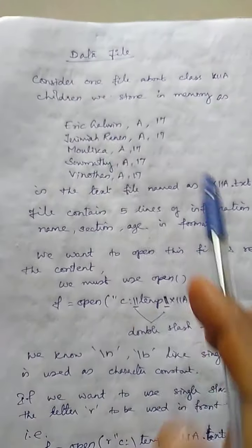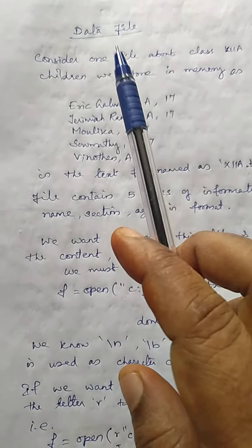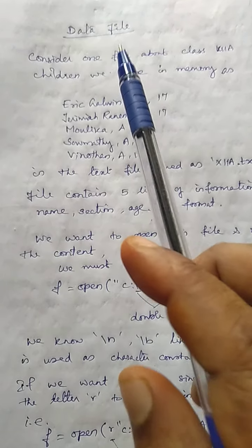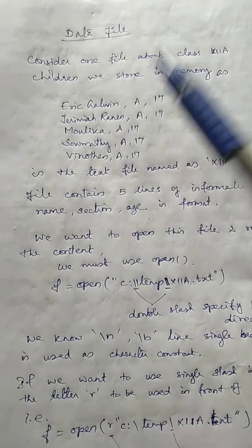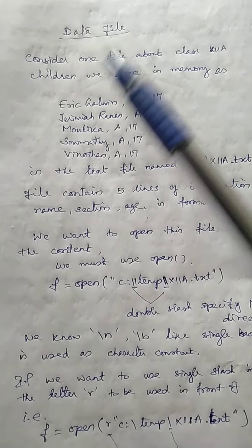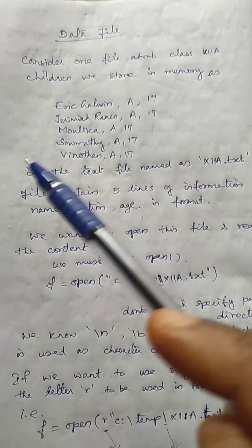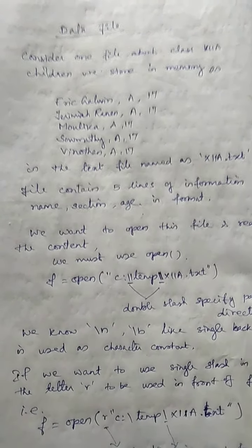Good morning children. Last class we discussed about this data file. What the data content we stored in the memory is known as what? Data file. The data file can be of two types. We can refer the data file in the memory in two forms.